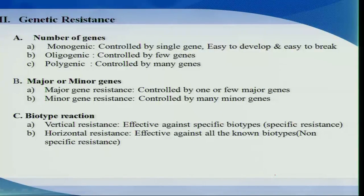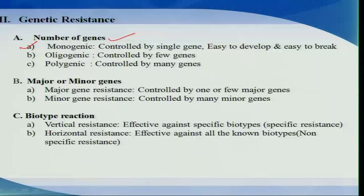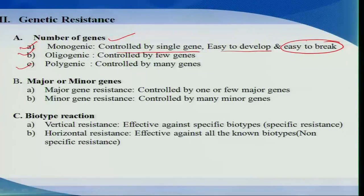Now, genetic resistance can be classified based on the number of genes involved: monogenic, oligogenic, or polygenic. Monogenic resistance is controlled by a single gene and is easy to develop, but carries a risk of resistance breaking down quickly. Oligogenic resistance is controlled by a few genes, and polygenic resistance is controlled by many genes. In the polygenic case, the resistance character tends to be quite permanent.